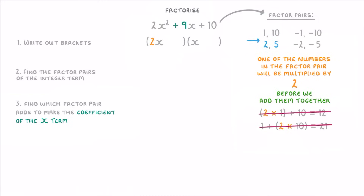So we move on to the next factor pair, 2 and 5. If we try 2×2 + 5, that is 9 — so this is the combination we want. Because it's the 2 that we multiplied by 2, we need to put the 2 in the second bracket so that it gets multiplied by the 2x term when expanded, and then we put the +5 in the other bracket.